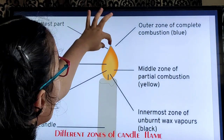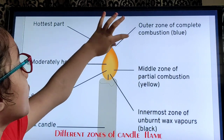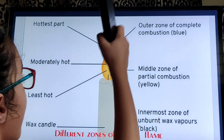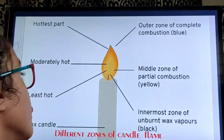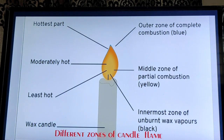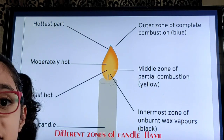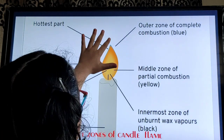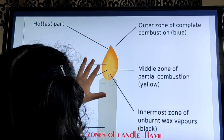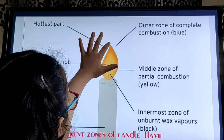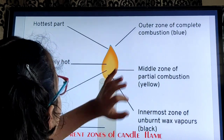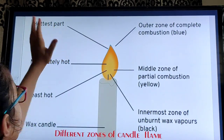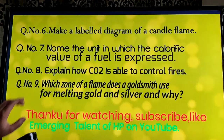The uppermost zone is the outer zone of complete combustion, which is blue. This is the blue light structure, and it is the hottest part.